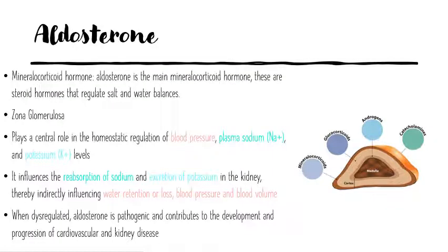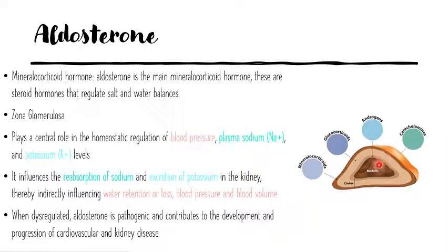The diseases we're going to talk about today arise because of imbalances of hormones produced by the adrenal glands. We recall from anatomy and histology that the adrenal glands have two main regions, the cortex and the medulla, out of which the cortex from the outermost to the innermost layer can be subdivided into the zona glomerulosa, zona fasciculata, and zona reticularis.